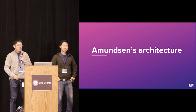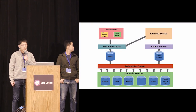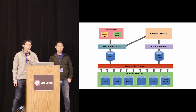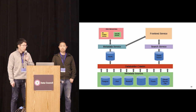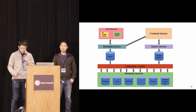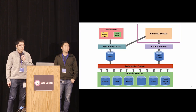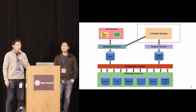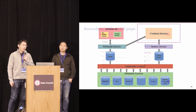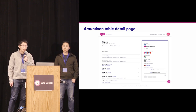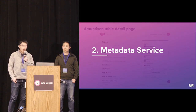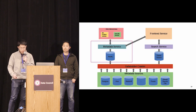Amundsen is a microservice architecture consisting of three microservices: a frontend service, a metadata service, a search service, and a data builder ingestion layer. The frontend service is written in React.js and Flask web framework, used as a portal for user interaction. It presents a table detail page with rich metadata: table names, column names, column descriptions, watermarks, owners, frequent users — all powered by the underlying metadata service.